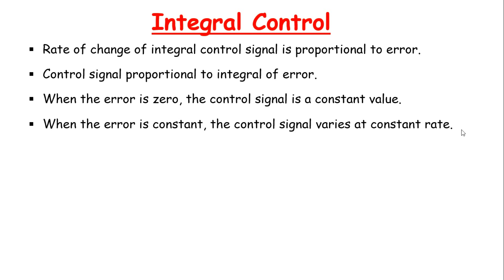The need for integral action shows up when it is noted that even with proportional action correction, the error does not go to zero in time. Suppose a system has some error ep, and the proportional mode provides a change in controller output of Kp × ep. As we watch the error over time, we note that the error may reduce but it does not go to zero — in fact it may become constant.